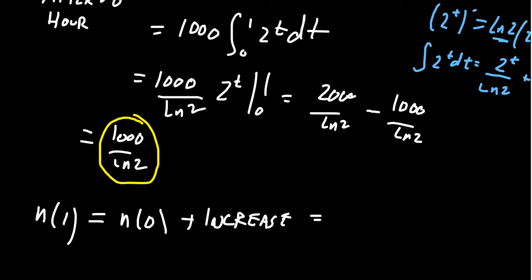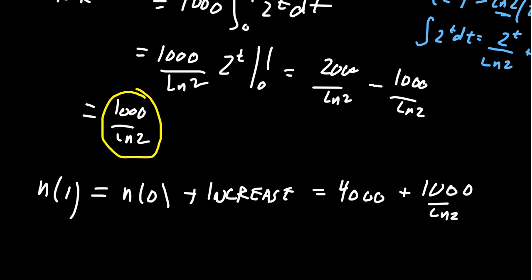So we know it started off with 4000 bacteria, and then we just added 1000 over the natural log of 2. And that is approximately—I can write that approximation right here—that's approximately 5442.7. We'll round to the nearest bacterium, so we'll say that's approximately 5443. You can't have half of the bacteria or anything like that.